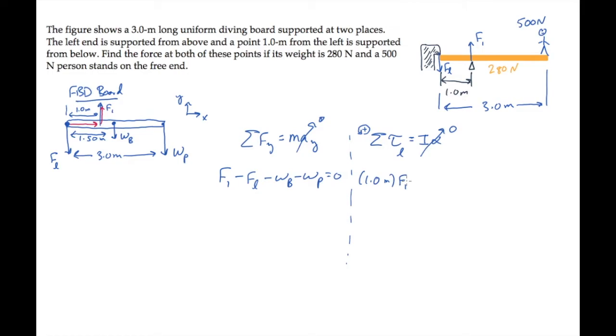The next force to calculate the torque for is the weight of the diving board itself, with this moment arm, and because it's directed down, the right hand rule shows us that torque is negative. Here's its moment arm, and there's the magnitude of the force causing the torque.